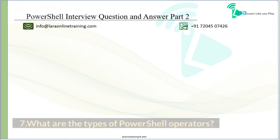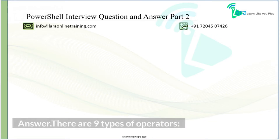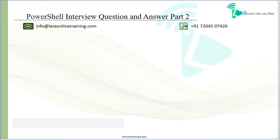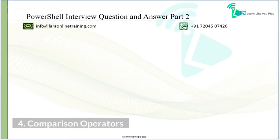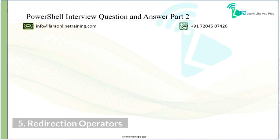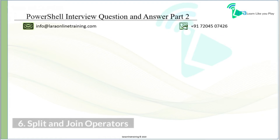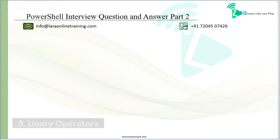What are the types of PowerShell operators? There are 9 types of operators: arithmetic operators, assignment operators, logical operators, comparison operators, redirection operators, split and join operators, type operators, unary operators, and special operators.